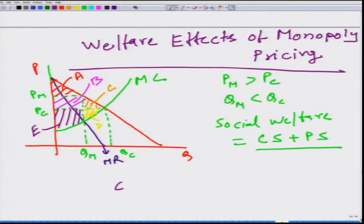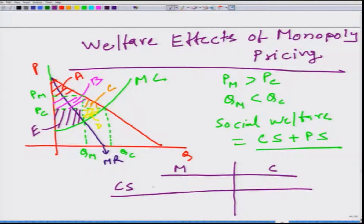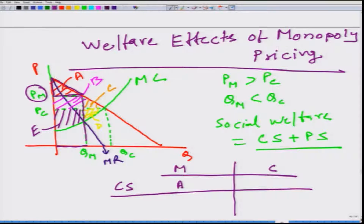Let us look at consumer surplus in the case of monopoly and in the perfectly competitive market. In the case of monopoly, area A gives the consumer surplus, because everyone has to pay price PM and only QM units are sold — that is the gain consumers make. In the case of the perfectly competitive market, consumers pay the lower price PC, so the consumer surplus is equal to A plus B plus C.